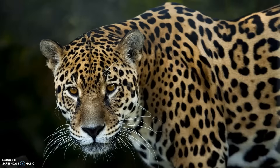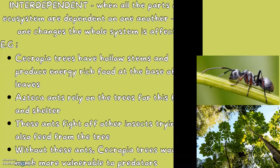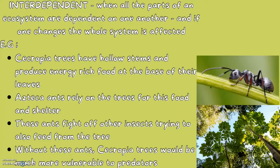How tropical rainforests are interdependent. Interdependent means when all the parts of an ecosystem are dependent on one another, and if one changes, the entire system is affected.